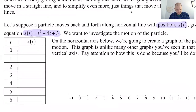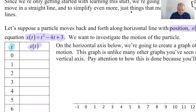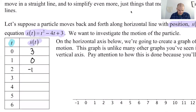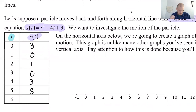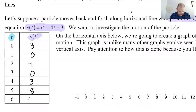So let's find the actual values by substituting t values into s(t). At t = 0: s = 3. At t = 1: 1 − 4 + 3 = 0. At t = 2: 4 − 8 + 3 = −1. At t = 3: 9 − 12 + 3 = 0. At t = 4: 16 − 16 + 3 = 3. At t = 5: 25 − 20 + 3 = 8. At t = 6: 36 − 24 + 3 = 15. So now I know where this thing is at certain times.